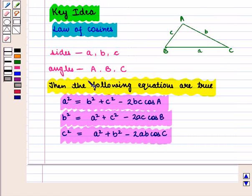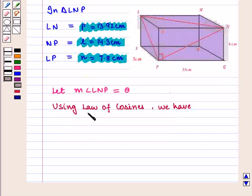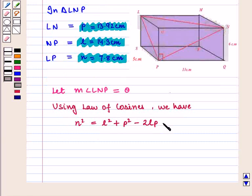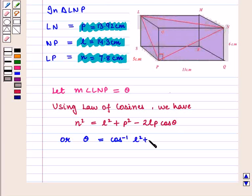Now, from the key idea, using the Law of Cosines, with N = 7.8 cm, we have N² = L² + P² − 2LP·cos(θ). We can rewrite this as θ = cos⁻¹((L² + P² − N²) / (2·L·P)).